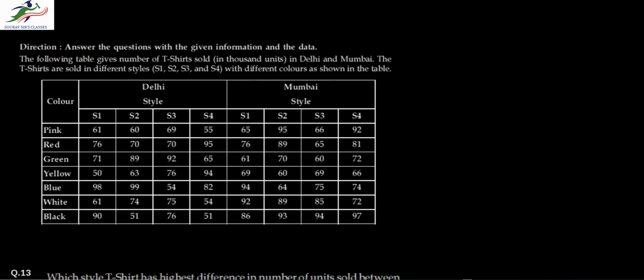Hello and welcome to Soros's classes. We move to the next set of questions. This section talks about the sale of T-shirts in two cities, Delhi and Mumbai. There are four types or styles: S1, S2, S3, and S4, and seven color combinations. The number of units sold for each style and color combination is given in the cells of the table.